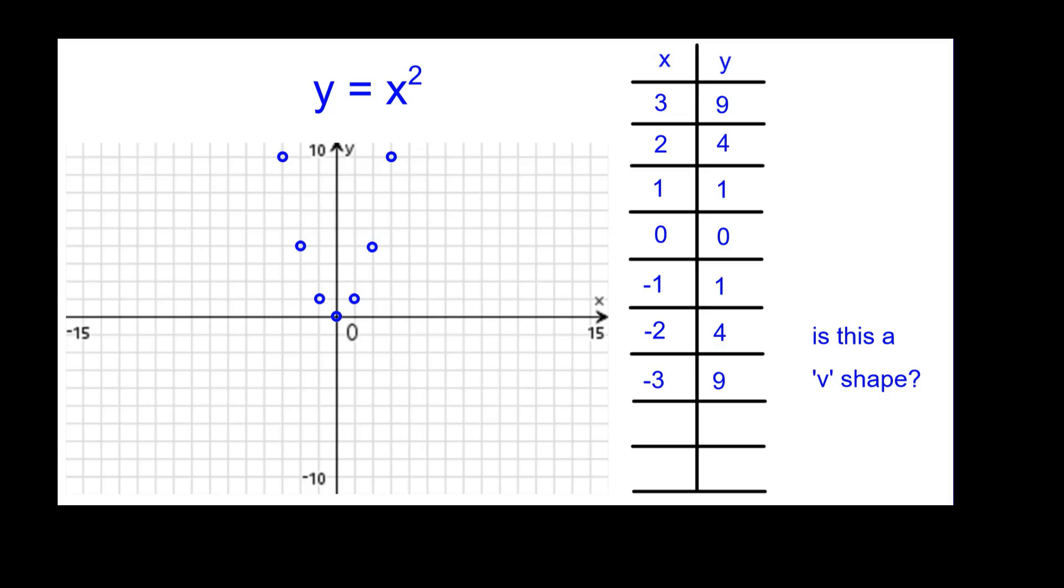Now is this a V-looking shape? Well, to investigate that, let's try two more values for x. Between 0 and 1 is a half, and on the other side is negative a half. So we'll go ahead and square one half.